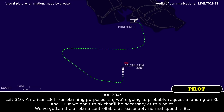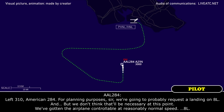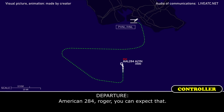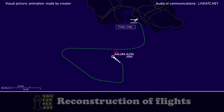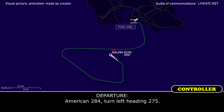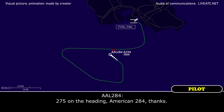For planning purposes, we're going to probably request a landing on 8-left. American 284, okay. And if it's on a chase ride, wheel full after arm. Hopefully that won't be necessary at this point. We've got the airplane controllable at a reasonably normal speed. American 284, roger. You can expect that. American 284, turn left heading 275. 275 on the heading, American 284, thank you. Perfect.